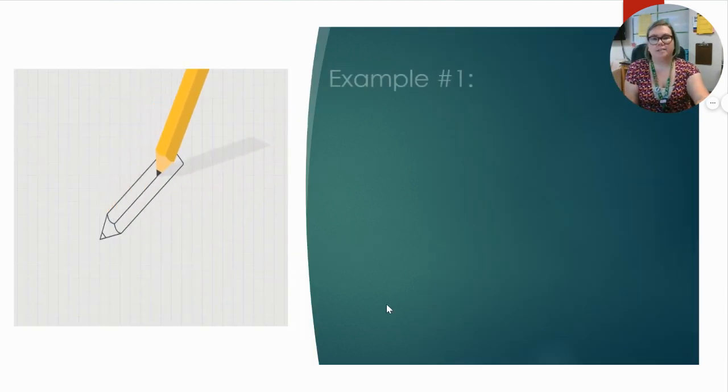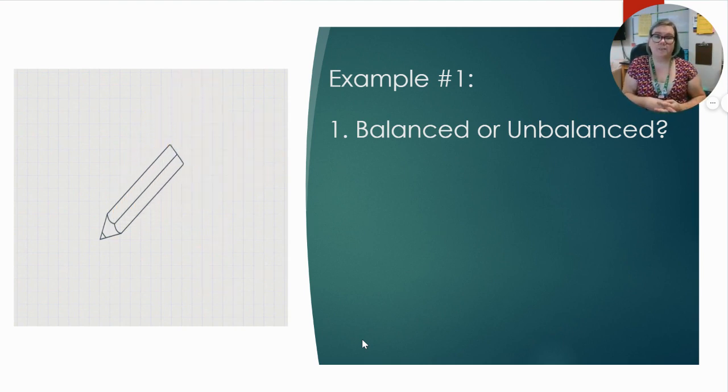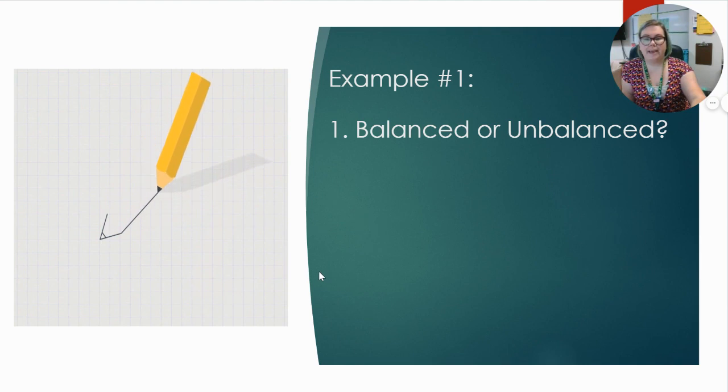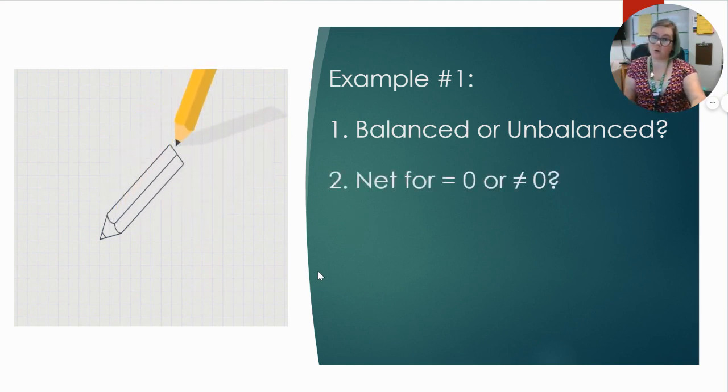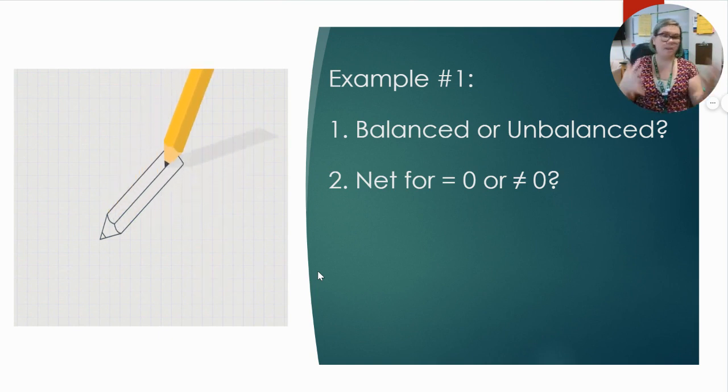Okay, so let's look at these examples. So first of all, pencil moving on paper, is it balanced or unbalanced? Well, this is going to be an unbalanced force because we have motion of that pencil, right? It's moving back and forth. And now is the net force zero or is it not zero? And since this is an unbalanced force, we're going to have a net force that is not zero, so something other than zero.